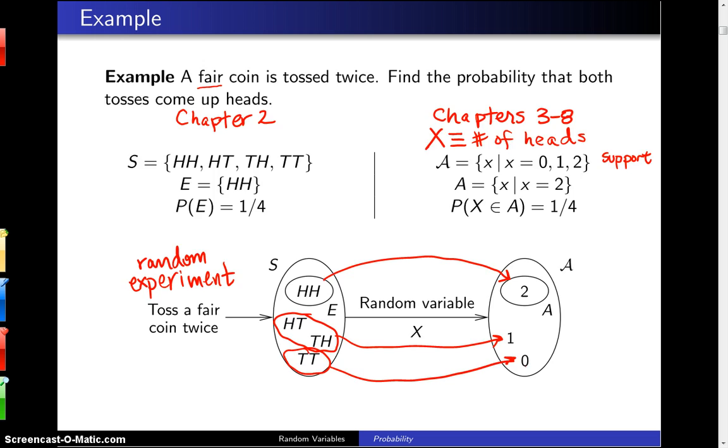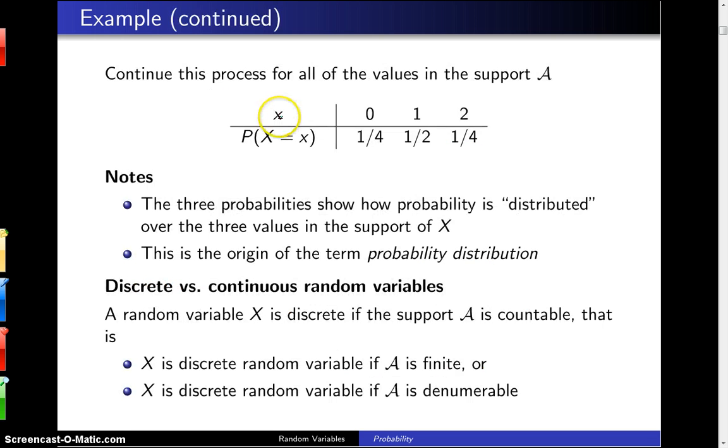Now on the next page, if you continue that, you have X and the probability X equals little x. For zero, one, and two, you get probabilities one-fourth, one-half, and one-fourth. Those three probabilities show how the probability is distributed over the three values of the support of X, and that's where you get the term probability distribution. We're showing how that probability is distributed over the support values.